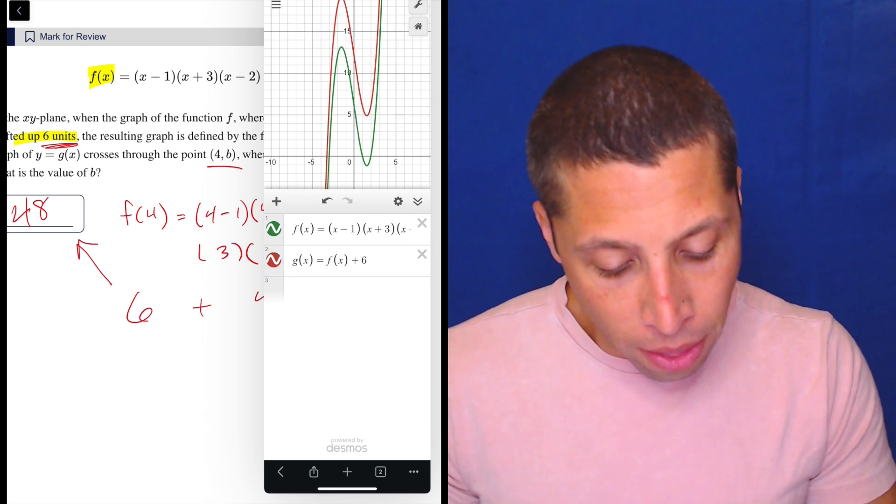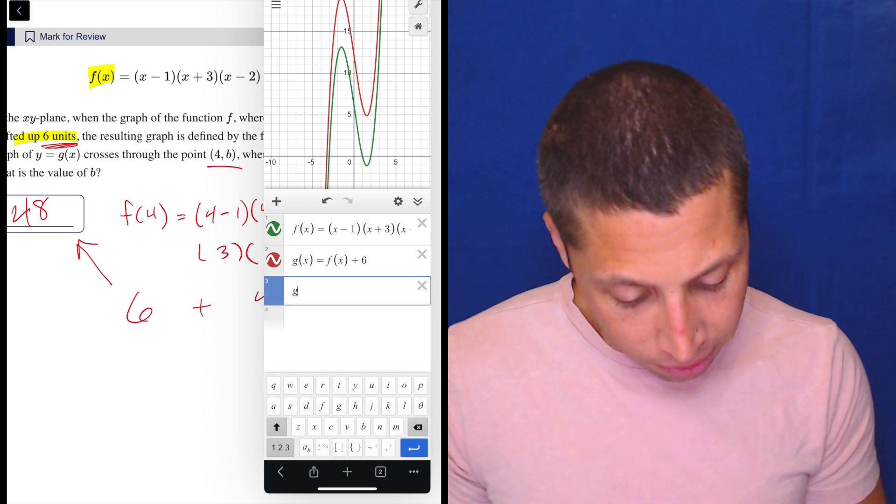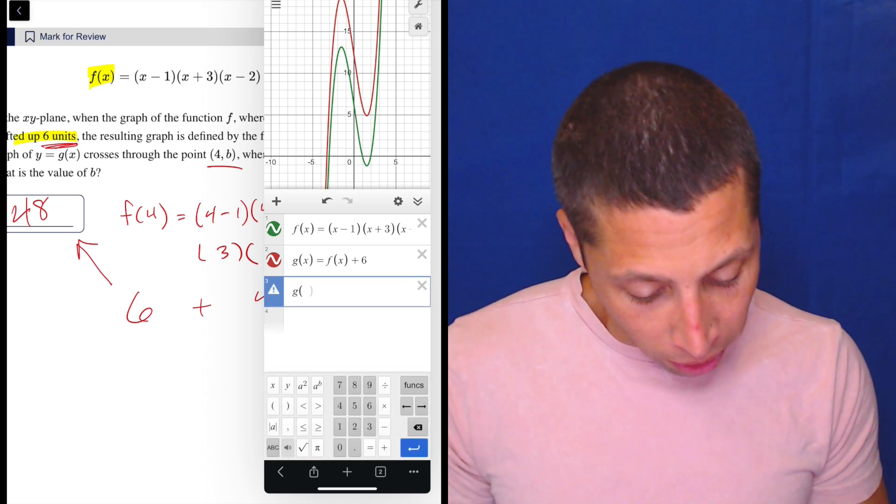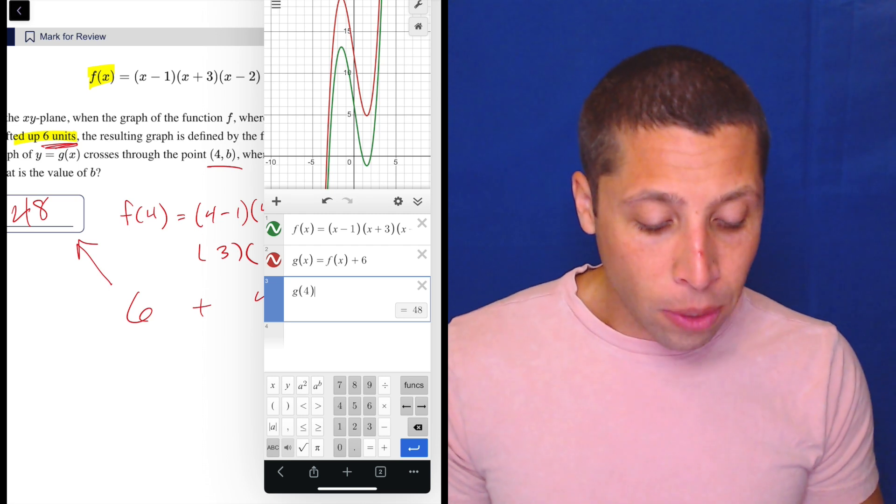So that's one way to do it. And then of course we can now do g(x), g of, or I should say g(4). And then there's our 48 right there. So lots of ways to do it.